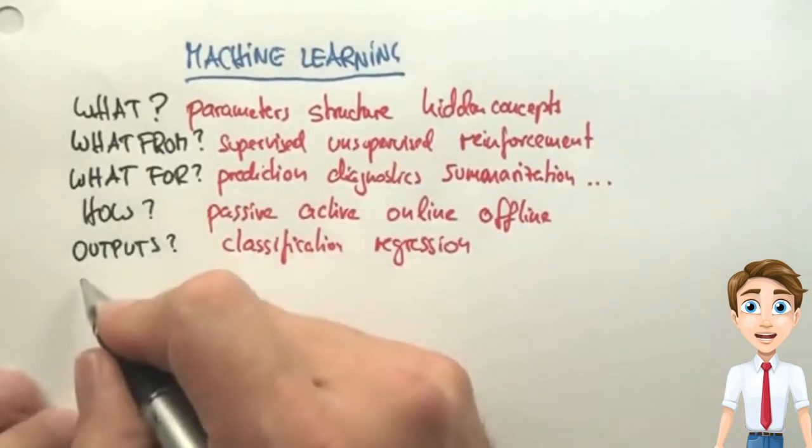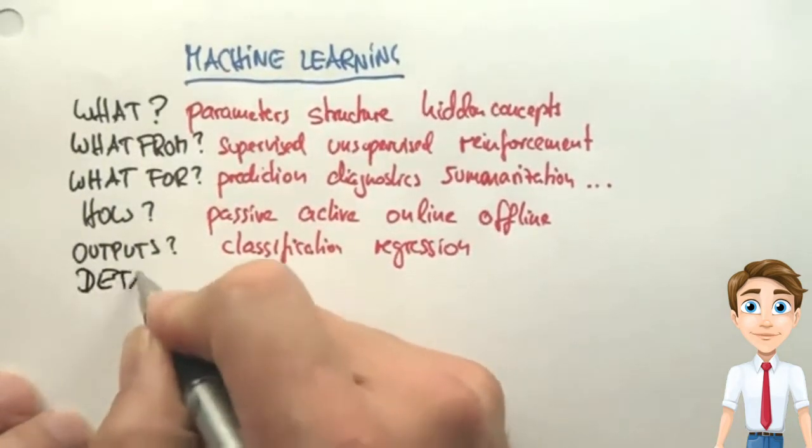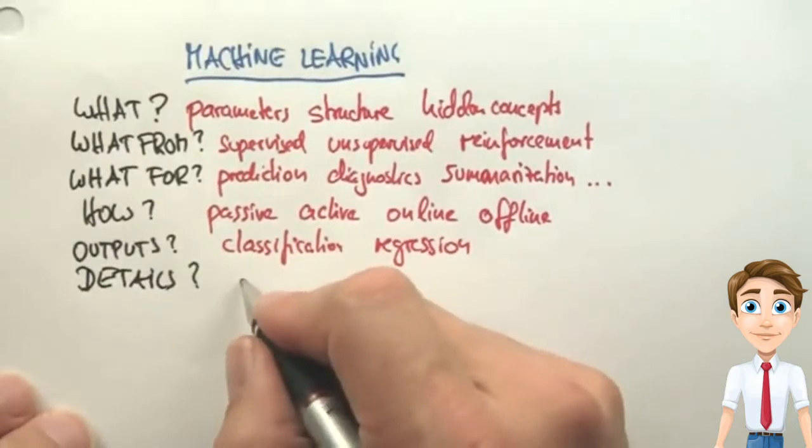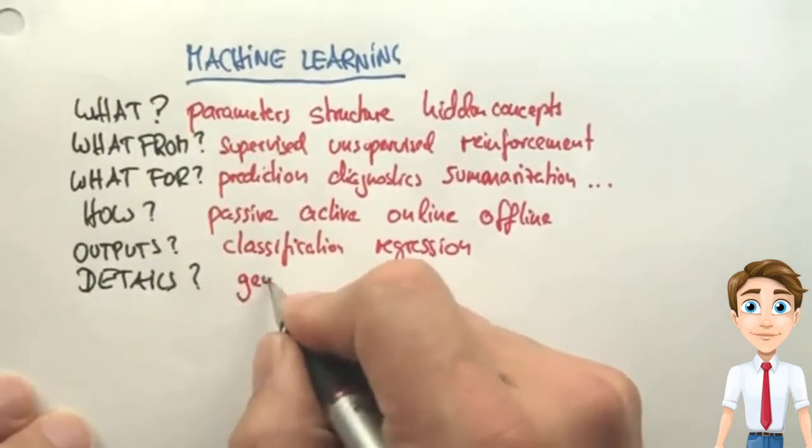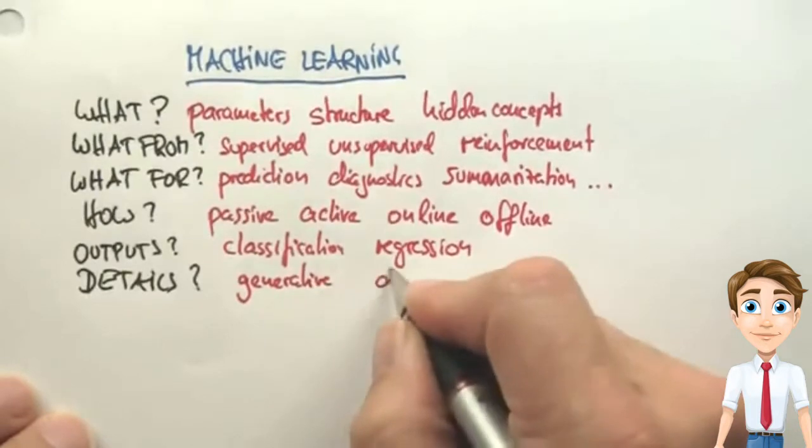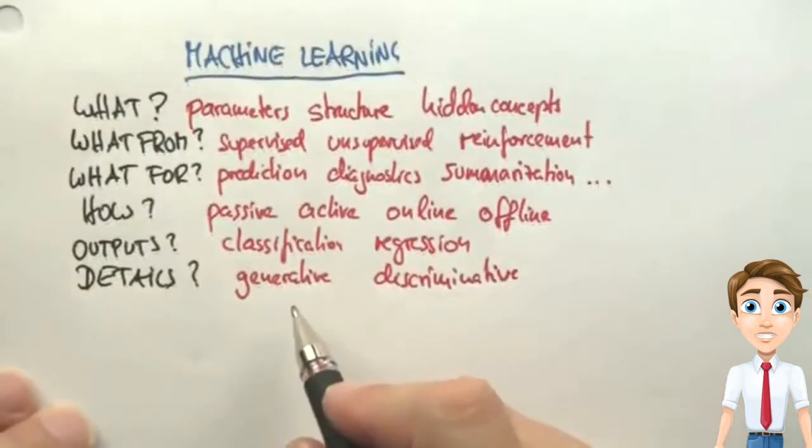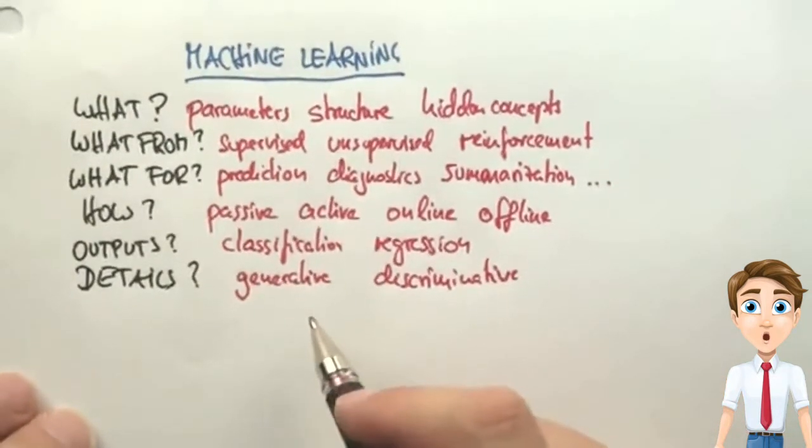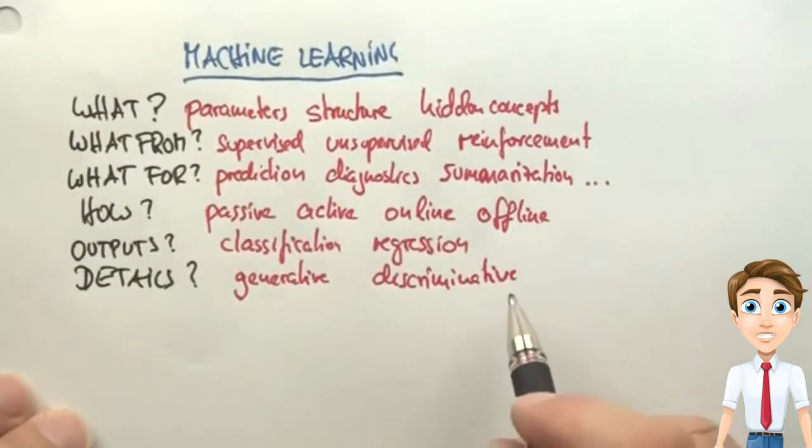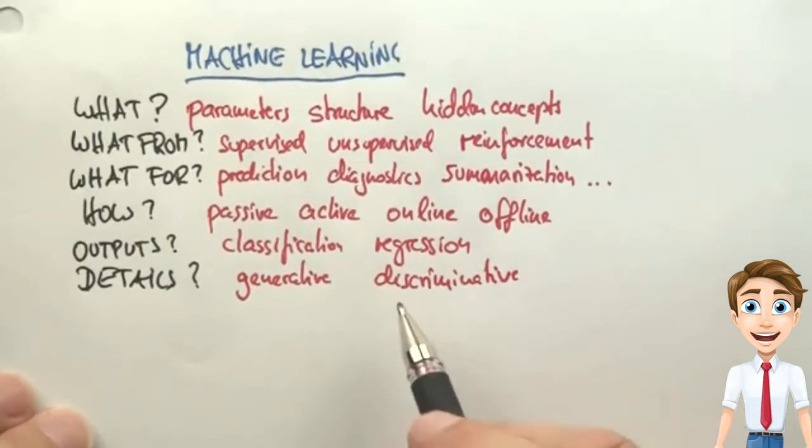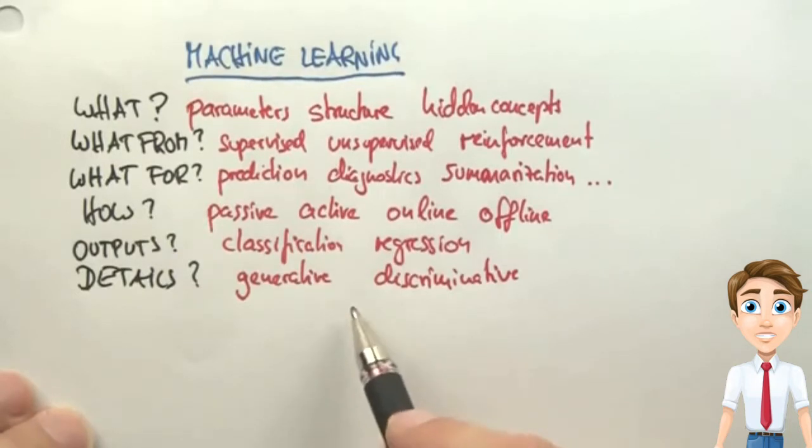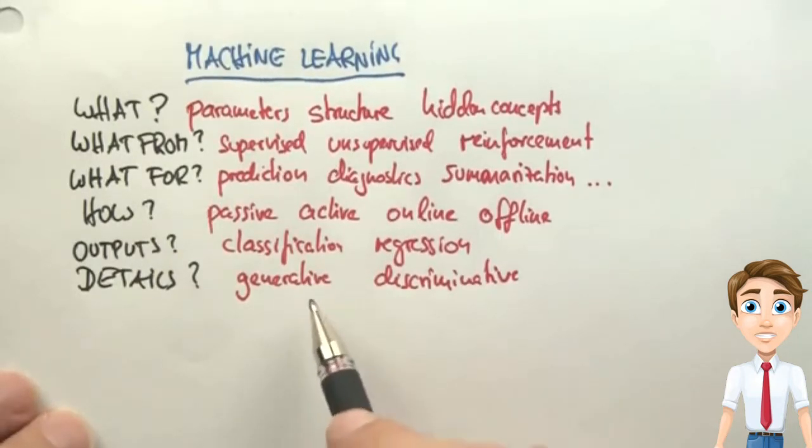And there's tons of internal details that people talk about. Just to name one, people distinguish generative from discriminative. Generative seeks to model the data as generally as possible versus discriminative methods seek to distinguish data. And this might sound like a superficial distinction, but has enormous ramification on the learning algorithm.